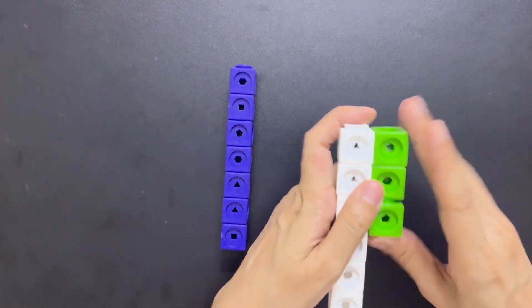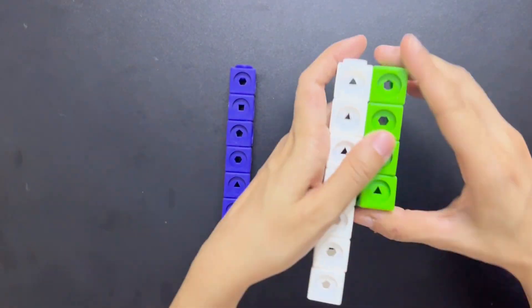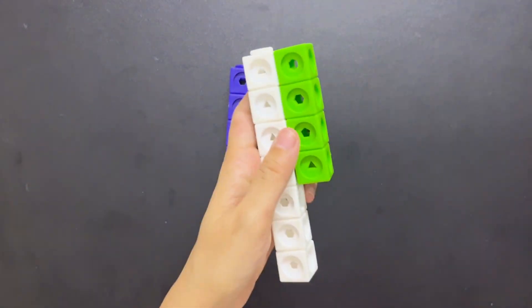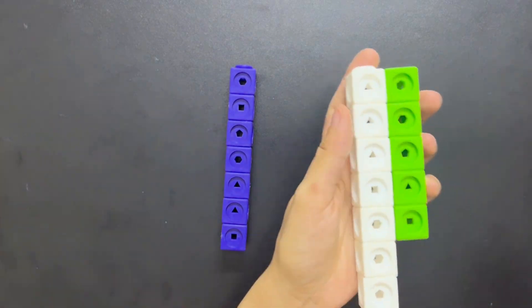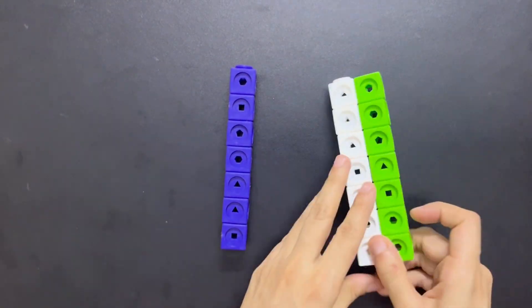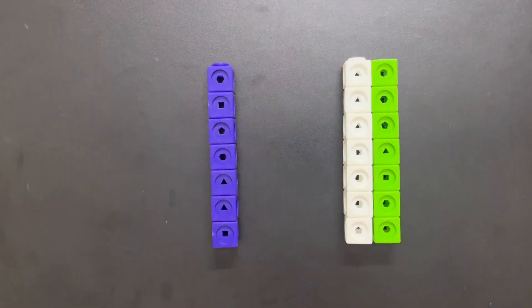Singles are numbers made of just one block, like 1, 3, and 5. Doubles are numbers made of two equal parts, like 2, 4, and 6. They're great at pairing up and balancing things.